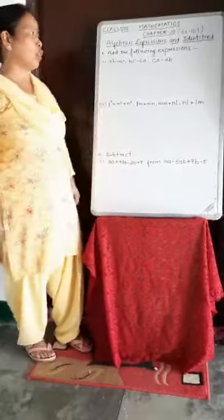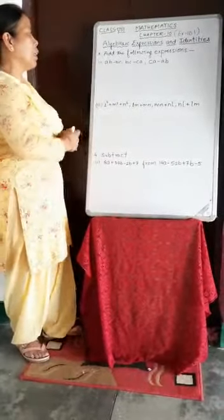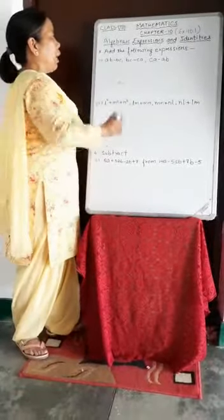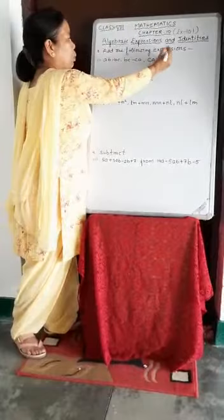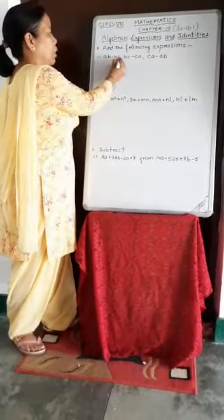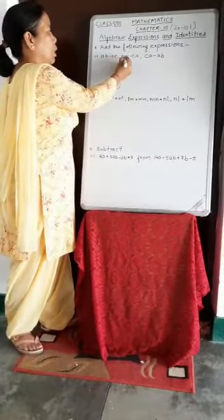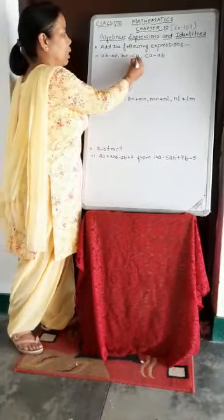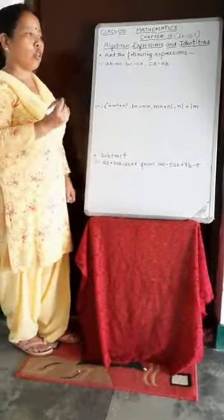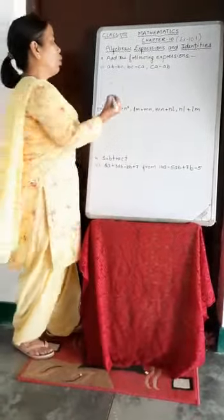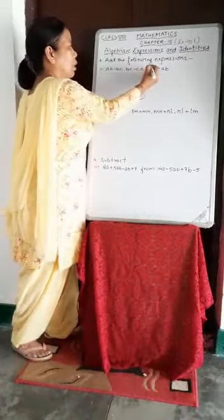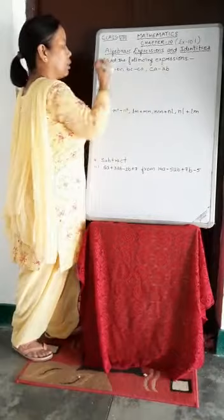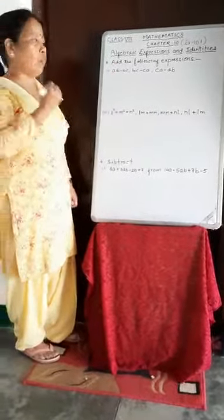Now see question number 3, first part. Add the following expressions: AB minus BC, BC minus CA, CA minus AB. You have to add these 3 expressions. So what you will do in this question is write these terms in column form.